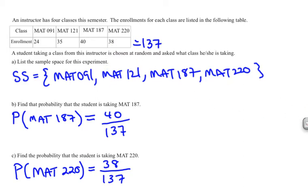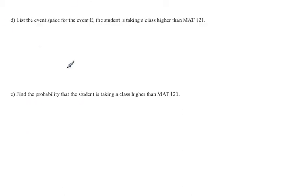All right so some more questions to ask. List the event space for the event e: the student is taking a class higher than math 121. So e is my event. So we're going to write an event space that means we're going to list everything that they're taking above math 121.